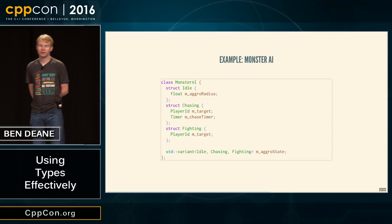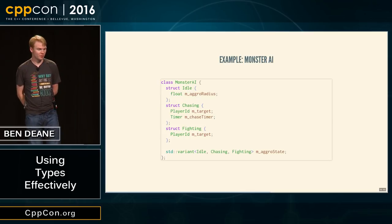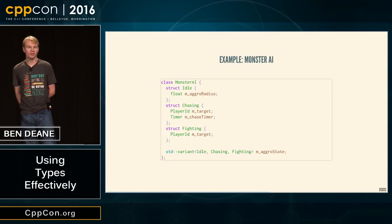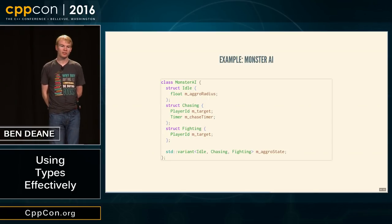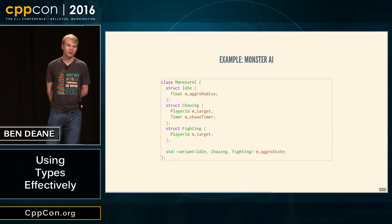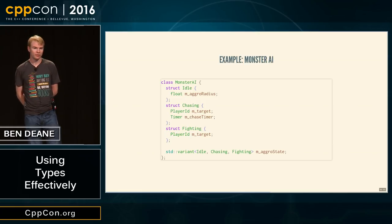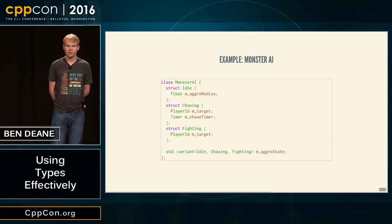One question: don't you have a chance for a bug if you don't copy your target from chasing to fighting? Weigh that against the bug of accidentally leaving the target populated when in an idle state. I think it's easier to perform an explicit assignment in the variant between chasing and fighting — you have a definite state transition. If performance is a concern when transitioning between states, you might factor out a shared subclass like 'engaged' that contains the target.